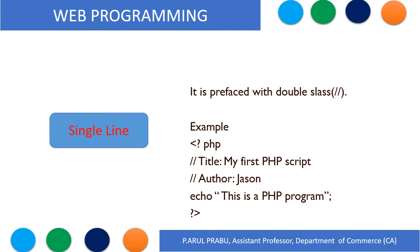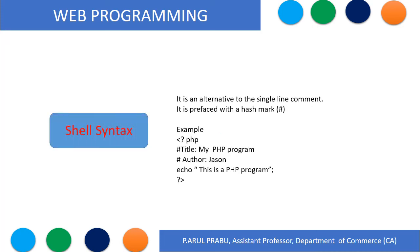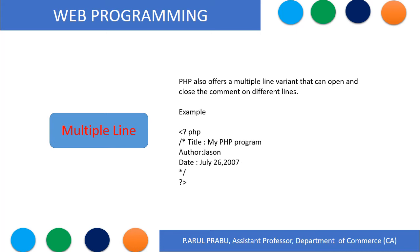When you run this program, the output will come as expected. The shell syntax is an alternative to the single line comment and is prefaced with a hash symbol. This program also produces output. Multiple line comments use a slash-star to open and a star-slash to close the comment block, allowing you to open and close the comment across different lines.